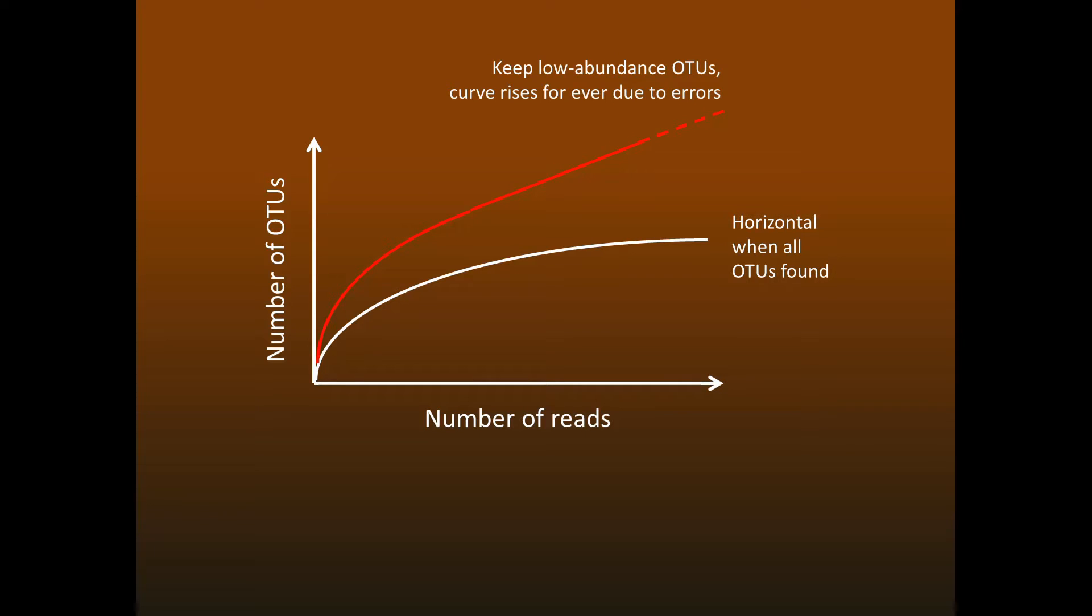If we keep the low-abundance sequences, then the measured diversity will continue to increase because of errors, regardless of how many reads we make. On the other hand, if we discard low-abundance sequences to keep the number of bad OTUs at a reasonable level, then the curve always appears to flatten out.